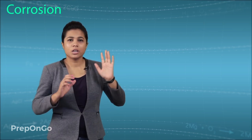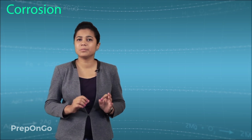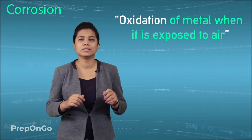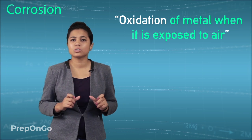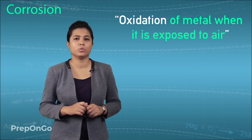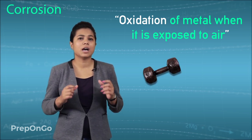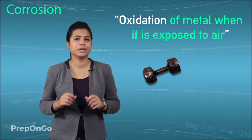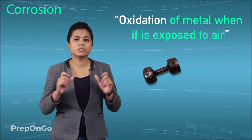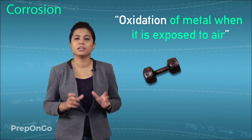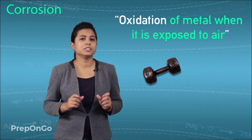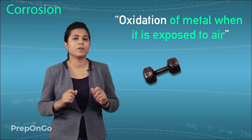The first effect is corrosion. Corrosion can be simply defined as the oxidation of metal when it is exposed to air. This oxide layer is called corrode. You must have seen iron getting a red coating after some time when it is kept in air. This red coating is nothing but iron oxide, and this is due to oxidation of iron.